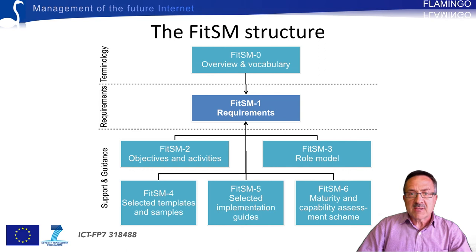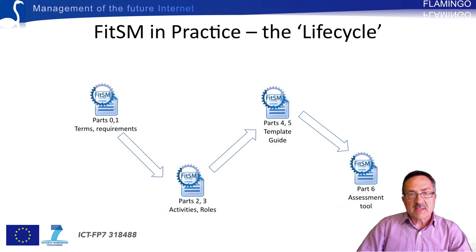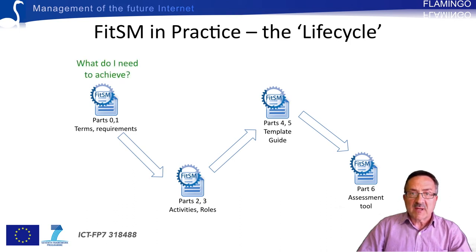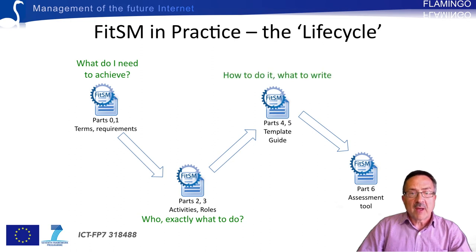Last but not least, there is a document that consists of an assessment tool to help service providers understand their actual capability levels in all the requirements of each process and help them plan roadmaps for improvement. In this slide, we see how the different constituting documents of FITSM play a specific role in the design life cycle of a service management system. FITSM 0 and 1 help the designer understand what to achieve. FITSM 2 and 3 help to understand what has to be done — activities — and who has to do each one — roles. FITSM 4 and 5 help to understand how to do things and how to write the necessary documents. Finally, FITSM 6 helps to check where we are or what we have achieved after some time of work.